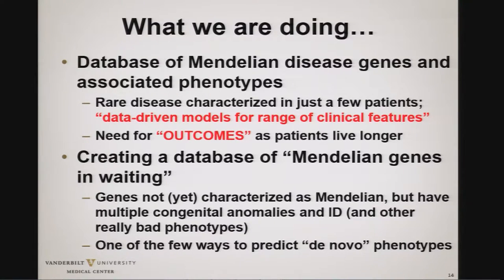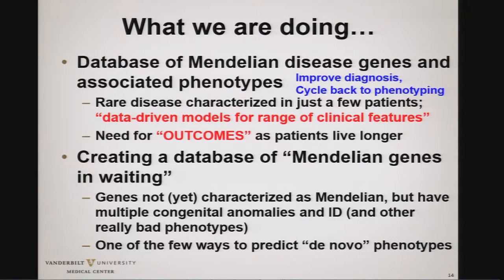We're also creating a database of Mendelian genes in waiting — because even with a careful look across just a couple of tissues, there are hundreds of genes not yet characterized as Mendelian disease genes, but where we see multiple congenital anomalies, intellectual disability, and other really bad phenotypes associated with altered expression of the gene. This is probably one of the ways to predict in advance what de novo mutations in some mouse embryonic lethal genes would actually look like were someone to be born with them.